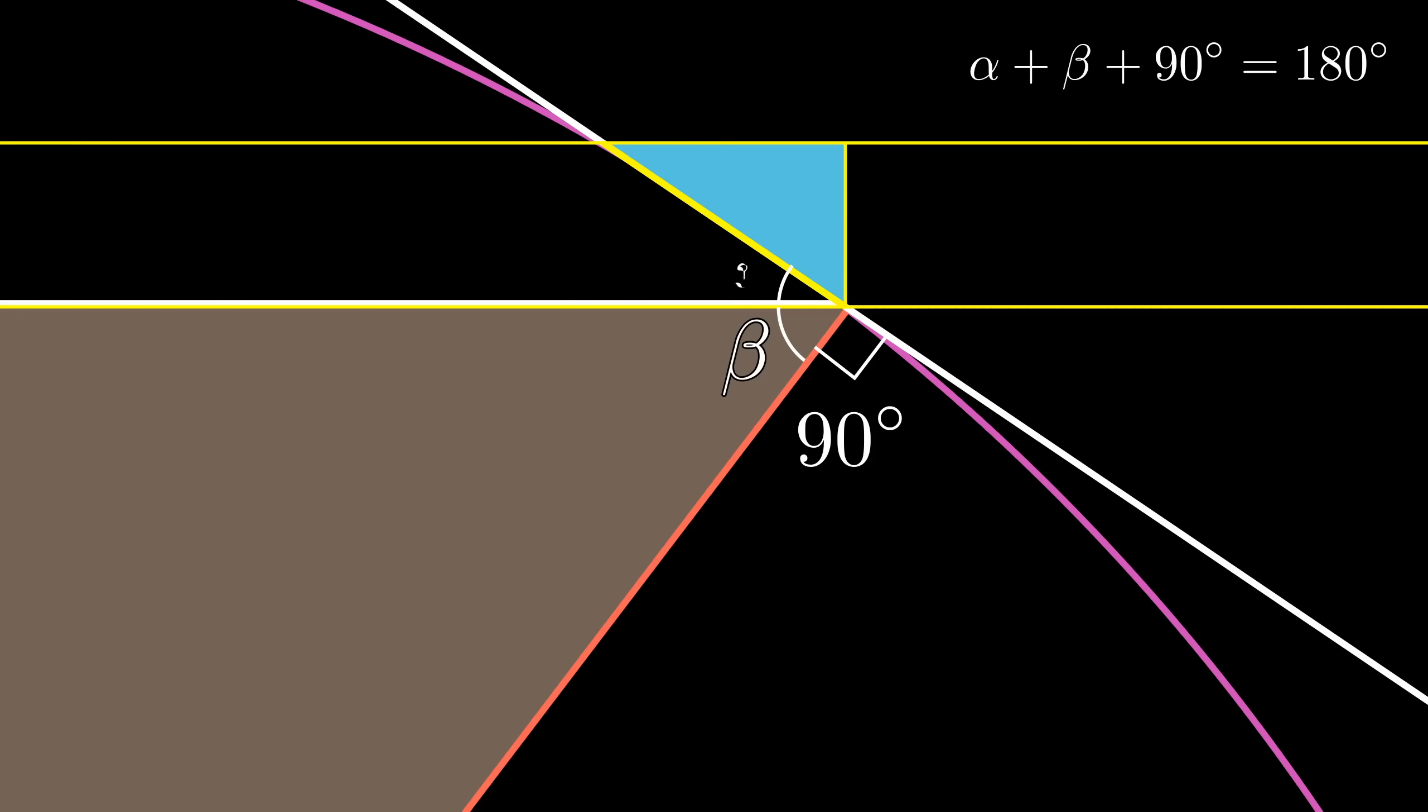So that other little angle must be alpha. And this lets us fill out a few more values, which reveals that this little triangle also has angles alpha, beta, and 90 degrees. So it is indeed similar to the big one.